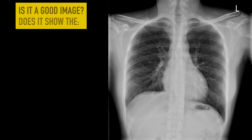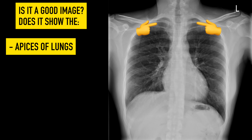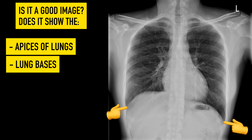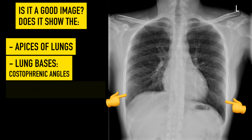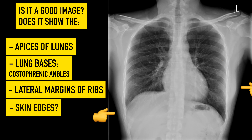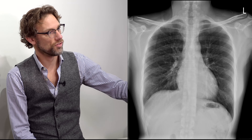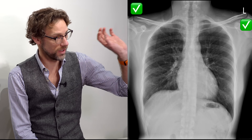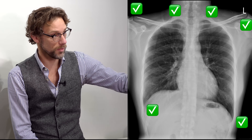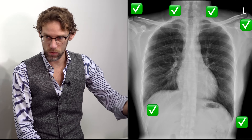Now, have we got everything on that we need to see? At the top of the image, we want to see the apices of the lungs. At the bottom, we want to see the bases of the lungs, which you can see with the costophrenic angles. At the sides, we want to see the lateral margins of the ribs. There's an argument for seeing the skin edges, but depending on patient size and equipment limits, you can end up giving far more X-rays than intended. On this X-ray, I can see the edge of the clavicles, the top of the lungs, and the costophrenic angles — so I can see all of the lungs.